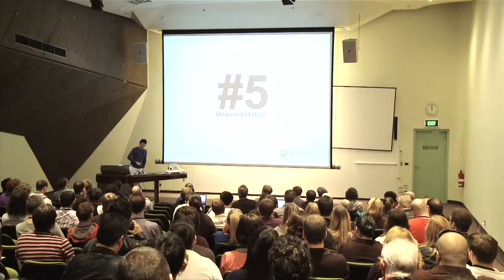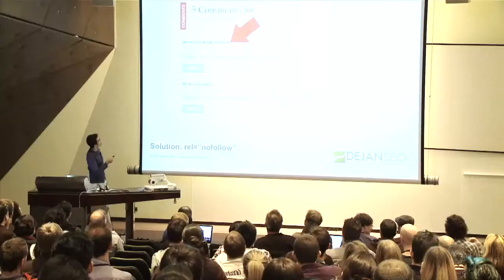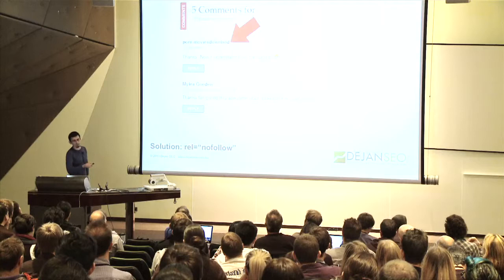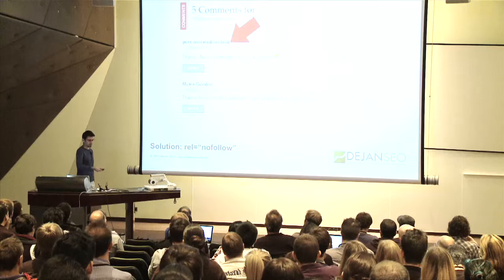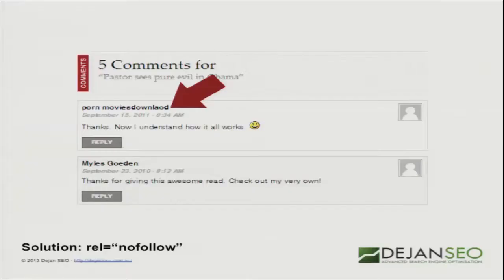Penguin-style mistakes include unguarded user-generated content. That link to 'porn movies download' is a negative SEO attempt by a competitor spamming comments. What this webmaster did wrong is not applying rel=nofollow to their comments, so you can put whatever keyword you want and it passes the link. For those who don't know, rel=nofollow prevents the link from being a search engine ranking signal. On any user-generated content that you can't vouch for, you should implement rel=nofollow.